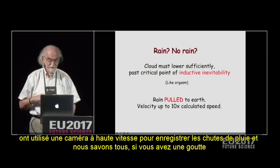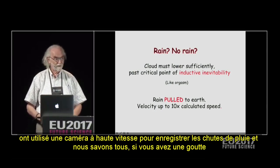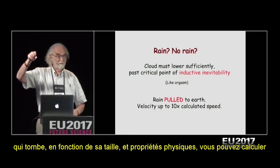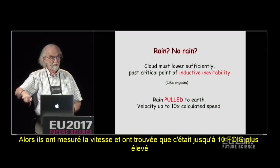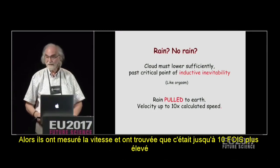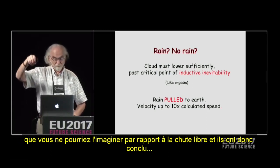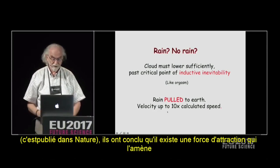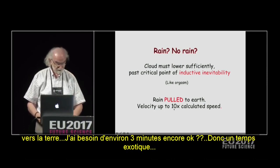Some researchers used high-speed video to record rainfall. We all know that if you have a droplet falling, based on its size and physical properties you can compute the velocity. Well, they measured the velocity and found it was up to 10 times higher than you could imagine due to the fall. So they concluded — and this was published in Nature — that there's a pulling force that brings rain to the earth.